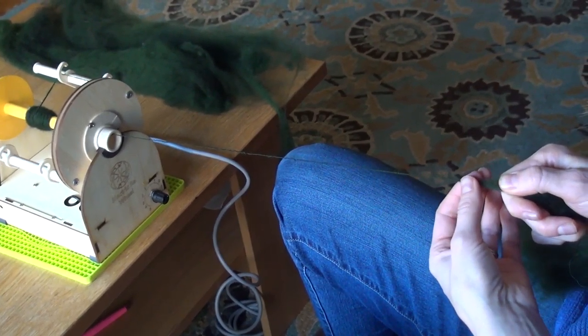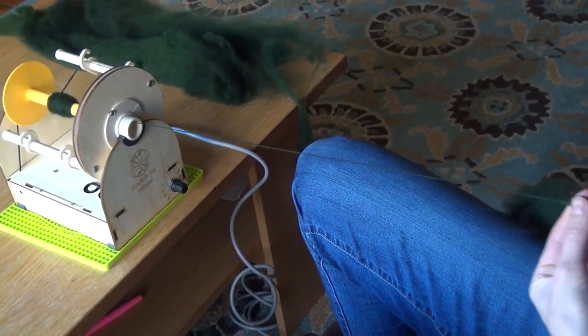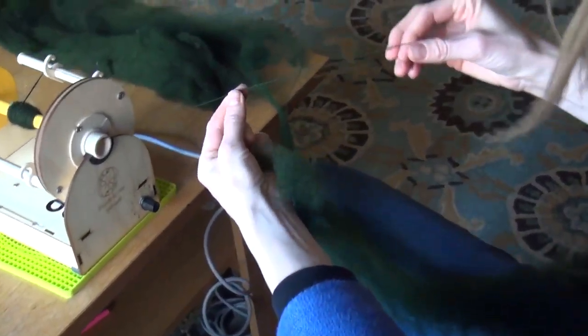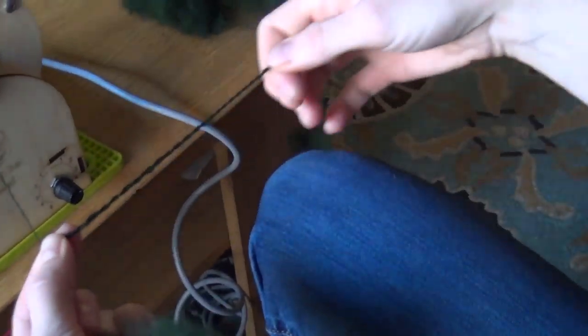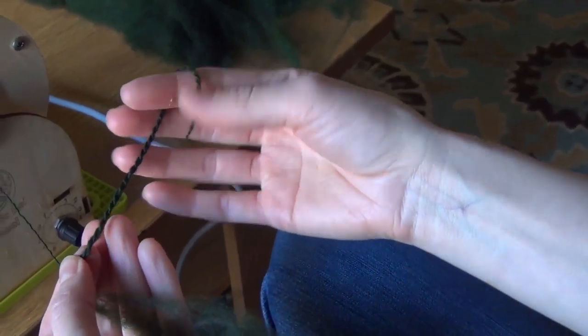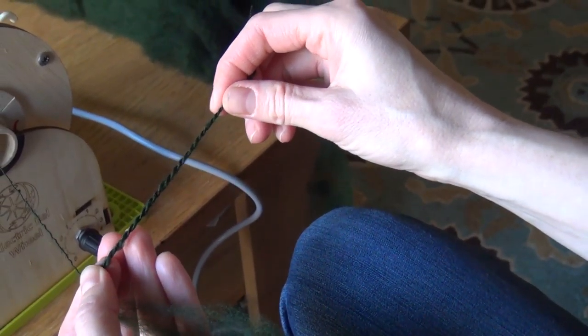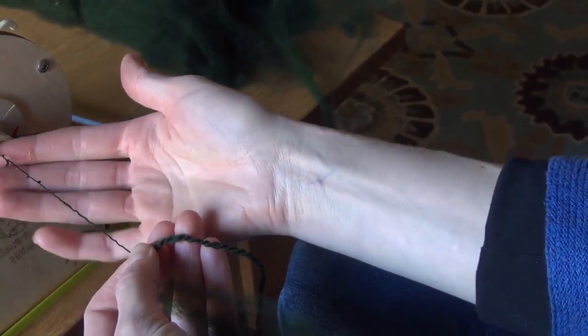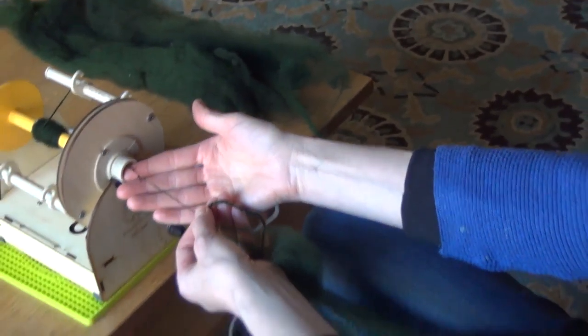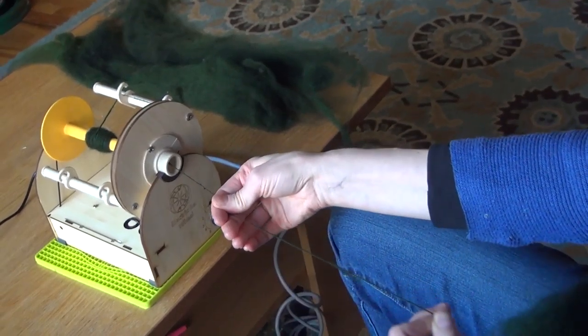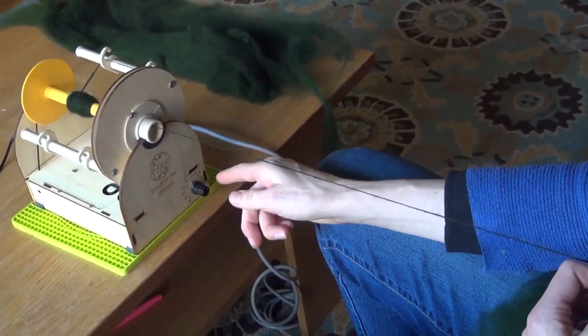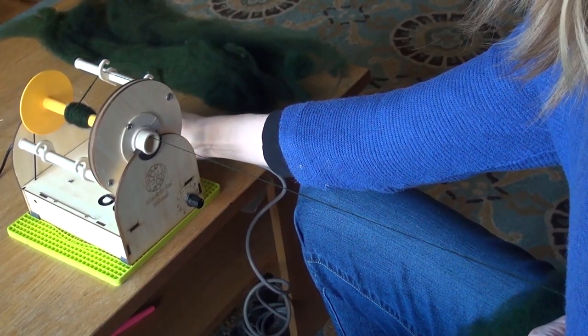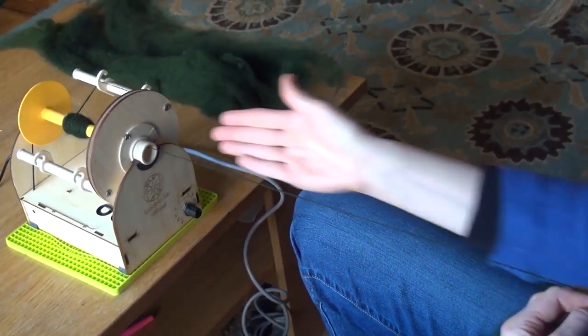As you can see, it's going to relax out the yarn a little bit. That took out some of the twist and it's a little bit softer and more spongy, not so ropey. Remember, you just have to turn down the twist or you can turn up the intake so it goes in faster.